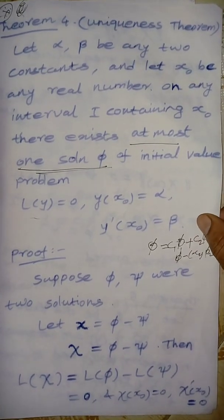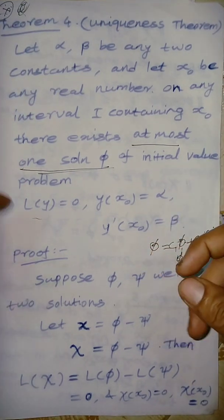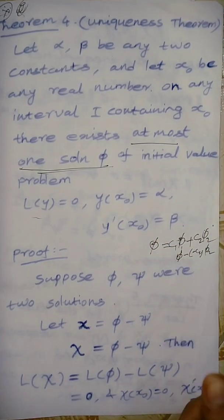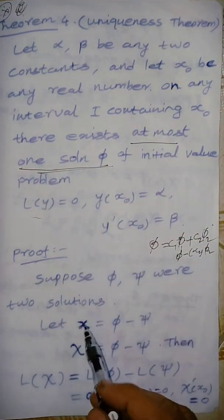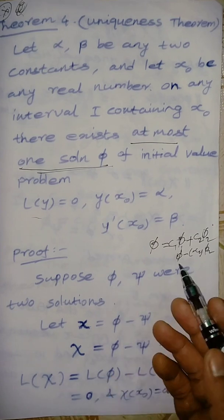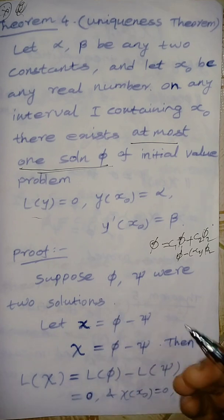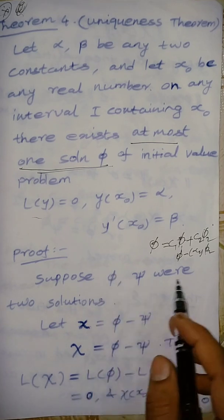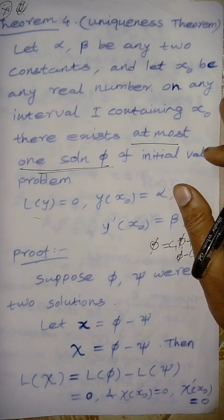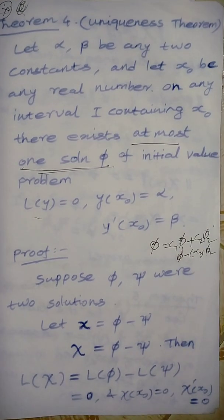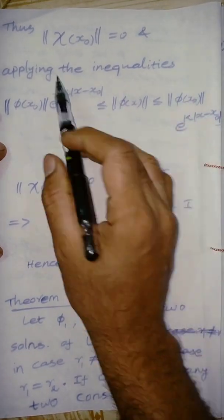So chi is nothing but pi minus psi, which is also a solution of the second order differential equation — the initial value problem. So we are proving this theorem. Unique solution — but we are taking a contradiction. Through the contradiction we are able to understand the solution. The difference is chi.